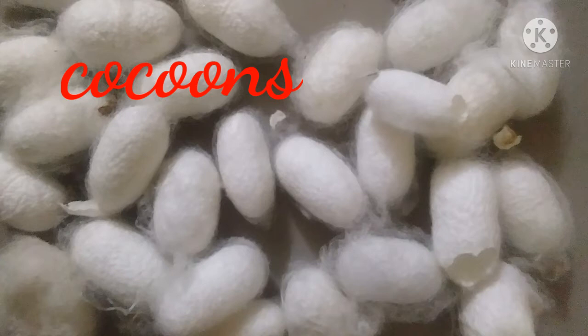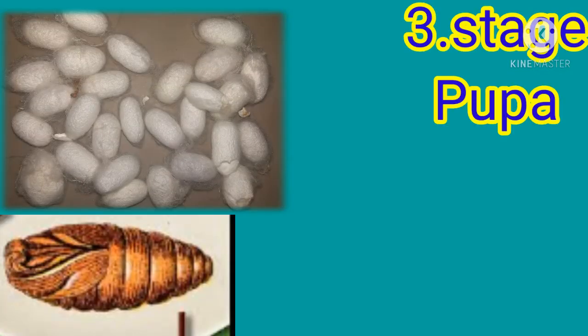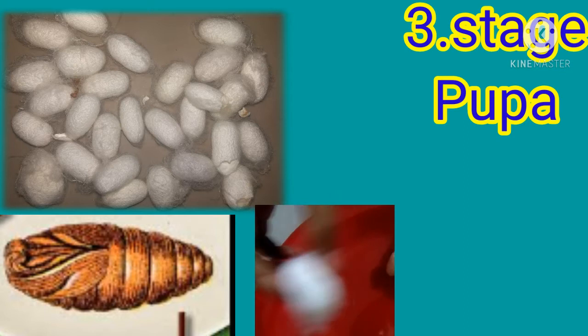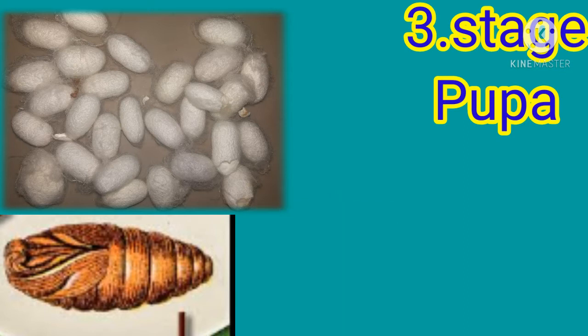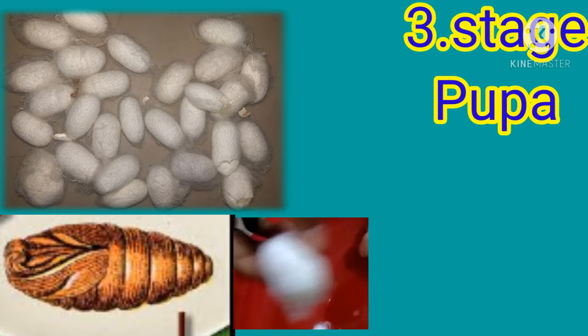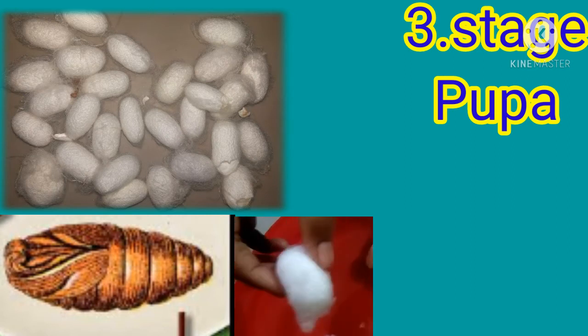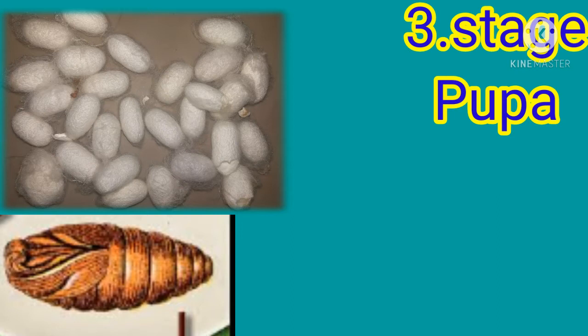So next we move on to the third stage — the pupa stage. In this stage, inside the cocoon, the caterpillar changes into a pupa. Inside the cocoon, the caterpillar starts developing its organs. Now I will shake the cocoon — can you hear any sound? This is the pupa stage, where the caterpillar is developing its organs.